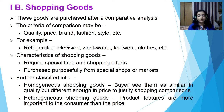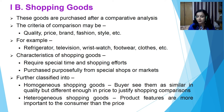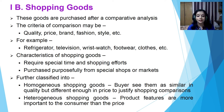Shopping goods are further classified as homogenous and heterogeneous. Homogenous shopping goods are seen as similar in quality but different enough in price to justify shopping comparisons — the seller must discuss price with the buyer. For heterogeneous shopping goods, product features are often more important to the consumer than price — for example, furniture and clothing. Sellers must carry a wide assortment of such products to satisfy individual tastes and have well-trained salespeople to provide information and advise customers.